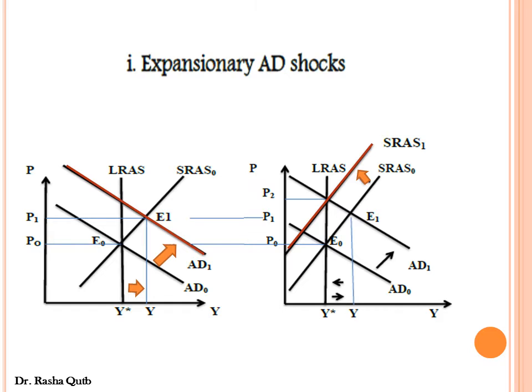In the long run, there is no change in the level of output and no change in the level of national income, while there is an increase in the price level.